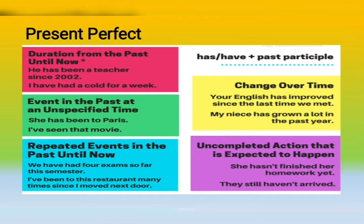Present perfect — when do we use it? It's the duration from the past until now. For example: he has been a teacher since 2020. We are going to use it also for an event in the past at an unspecified time: she has been to Paris, I have seen that movie. Repeated events in the past until now: we have had four exams so far this semester.